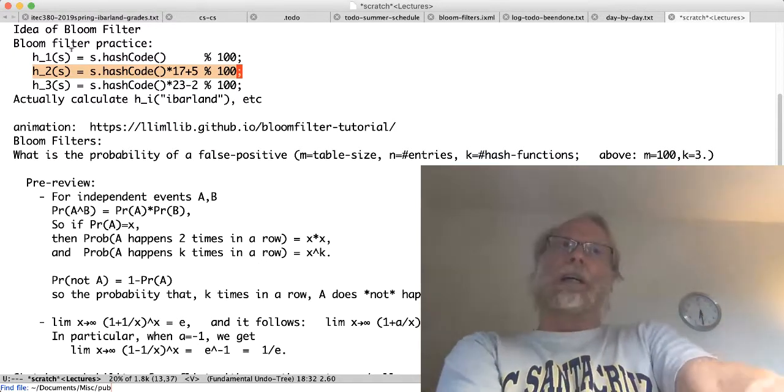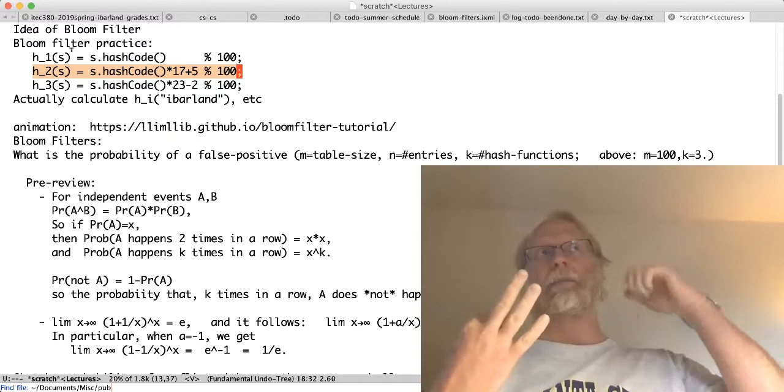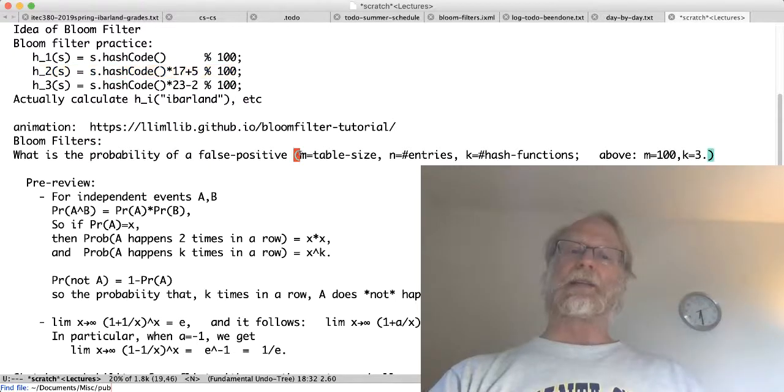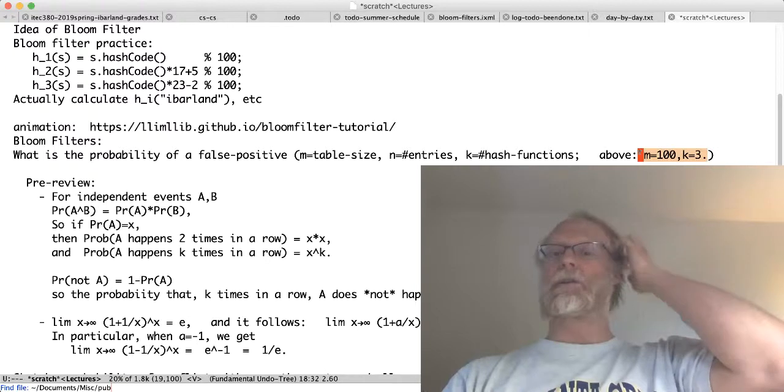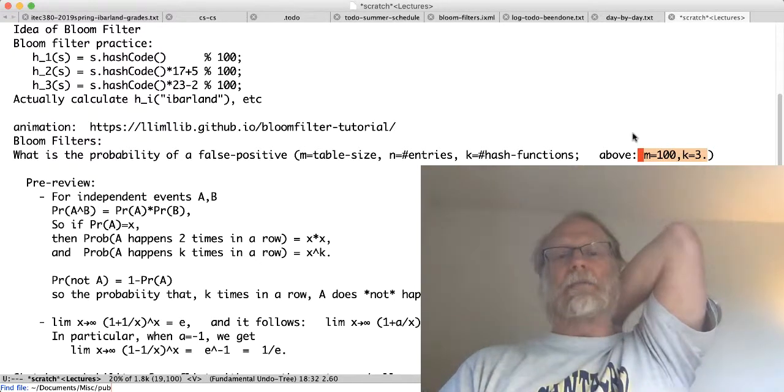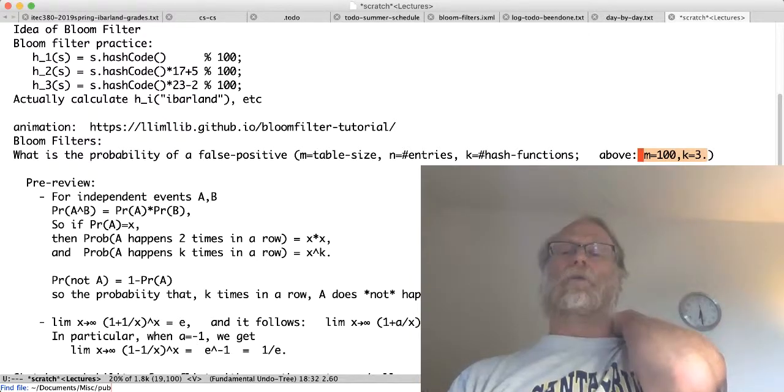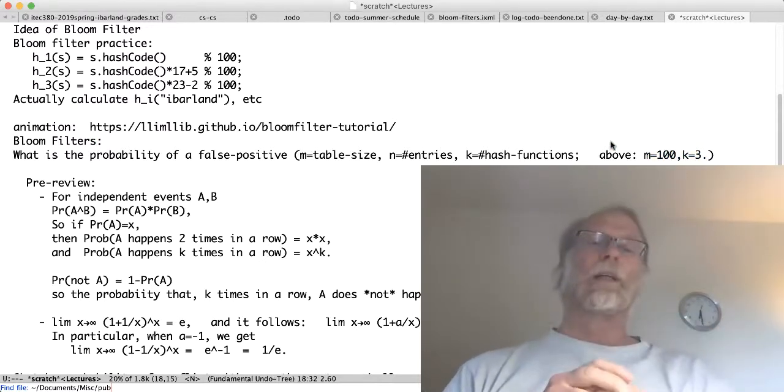Rule of thumb: if you use three hash functions, and you have your ratio n to m is 1 to 10, where m is your table size, n will be the number of things in the table. You have to sort of guess in the future how many things you'll think you'll have in there. k will be our number of hash functions, we're using k equals three. I was making up a hundred as my table size before. If n over m is about one-tenth, and k is three, you get about a one-percent false positive.